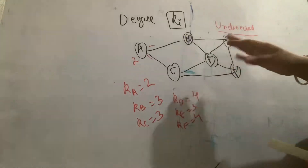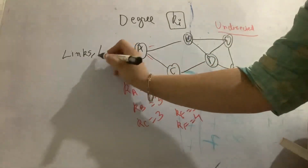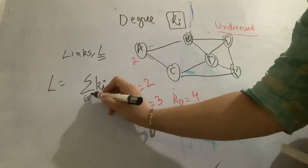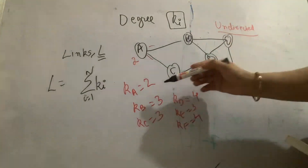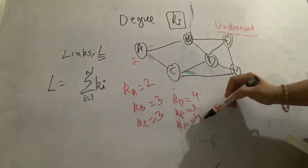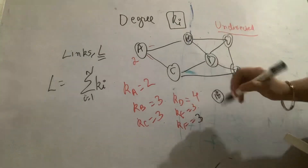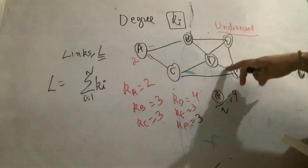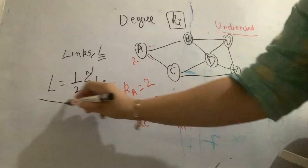The total number of links in the graph, L, can be given as: L equals the summation of all the degrees of all nodes running from 1 to N. If I add up all the degrees — 2 plus 3 plus 3 plus 4 plus 3 plus 3 — I get 18. If I divide this by 2, I get 9. So 9 is the number of edges. There are 9 edges or 9 links in the graph. The number of links in the graph is half the total of all the degrees.